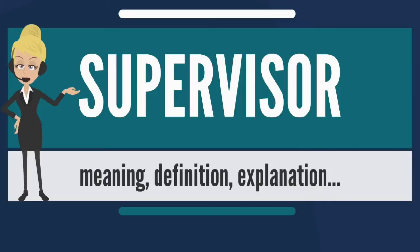2. Lacking budget authority means that a supervisor is provided a budget developed by management within which constraints the supervisor is expected to provide a productive environment for the employees. A supervisor will usually have the authority to make purchases within specified limits and is also given the power to approve work hours and other payroll issues. Normally, budget-affecting requests such as travel will require not only the supervisor's approval but the approval of one or more layers of management.